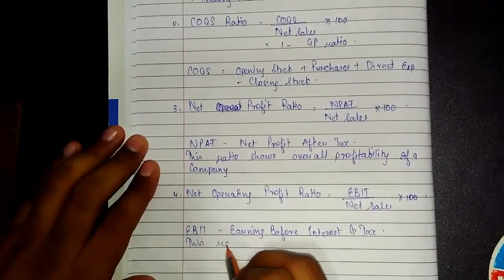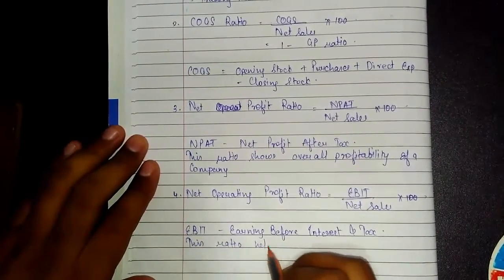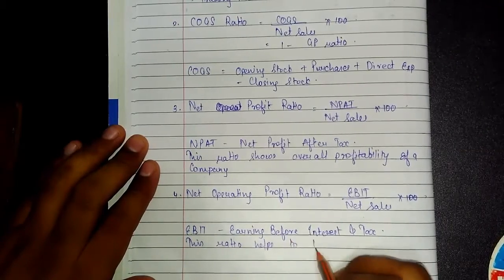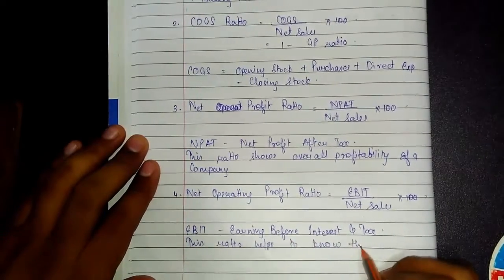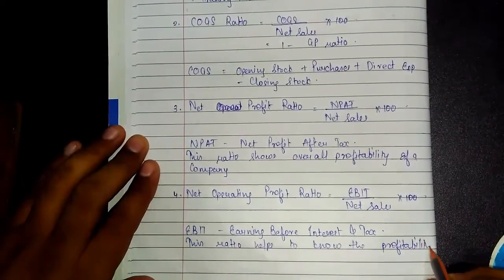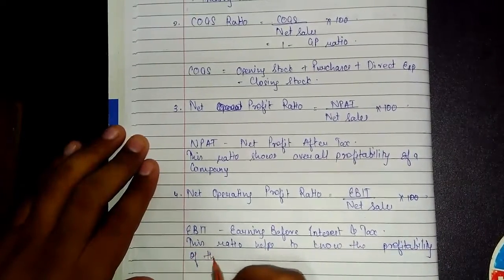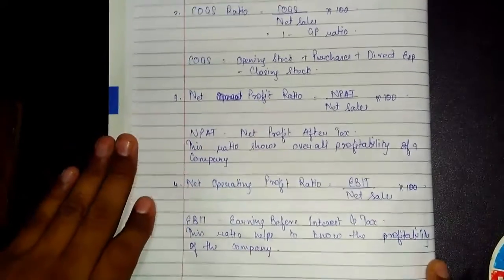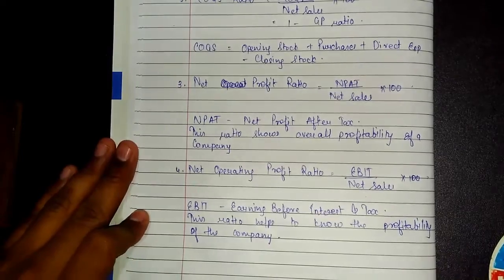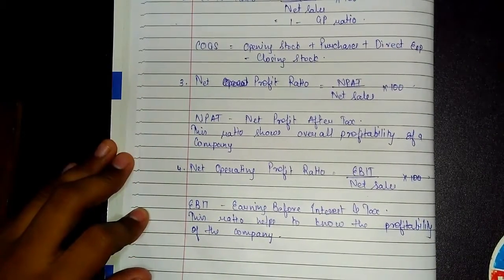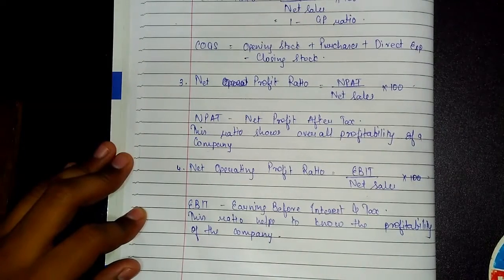The net operating profit ratio helps to know the profitability of the company — specifically operating profitability, not overall profitability. Please pause the video and copy these two formulas.